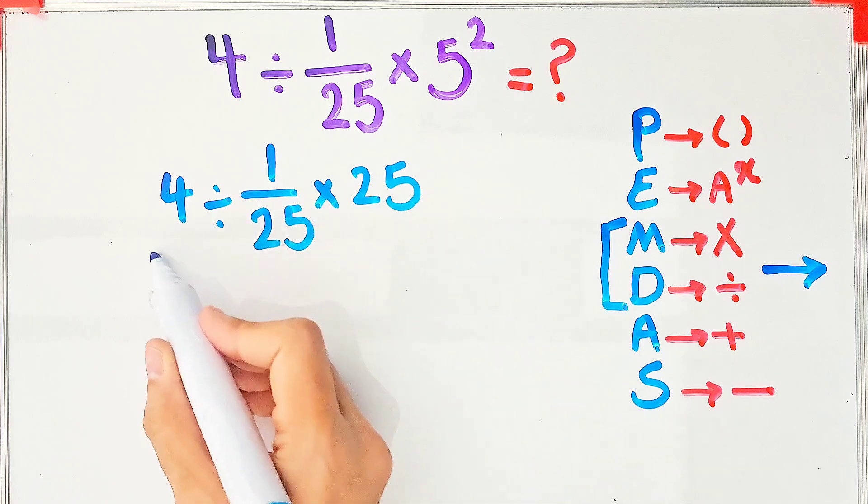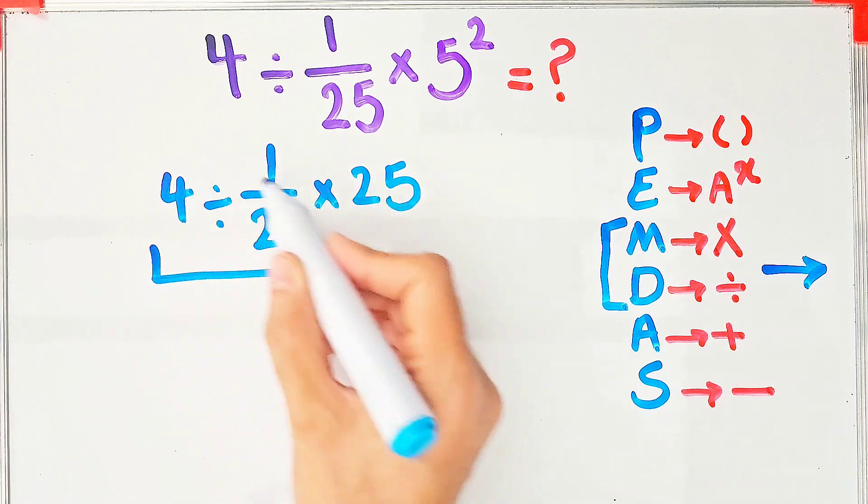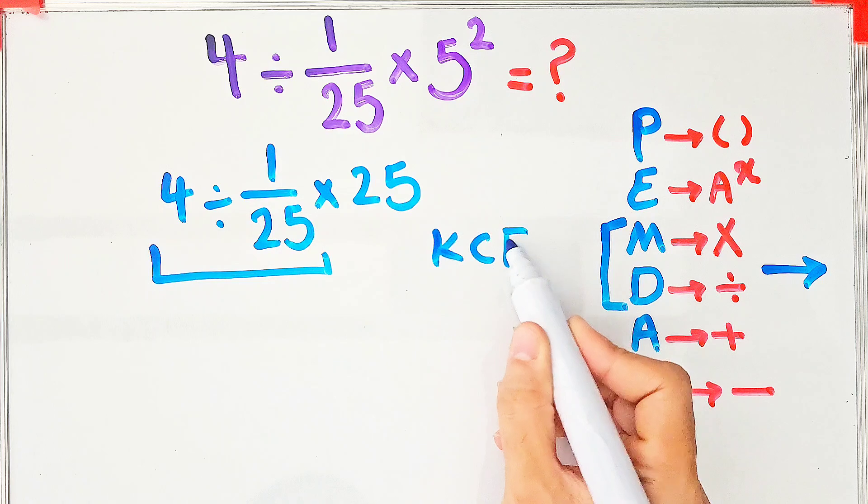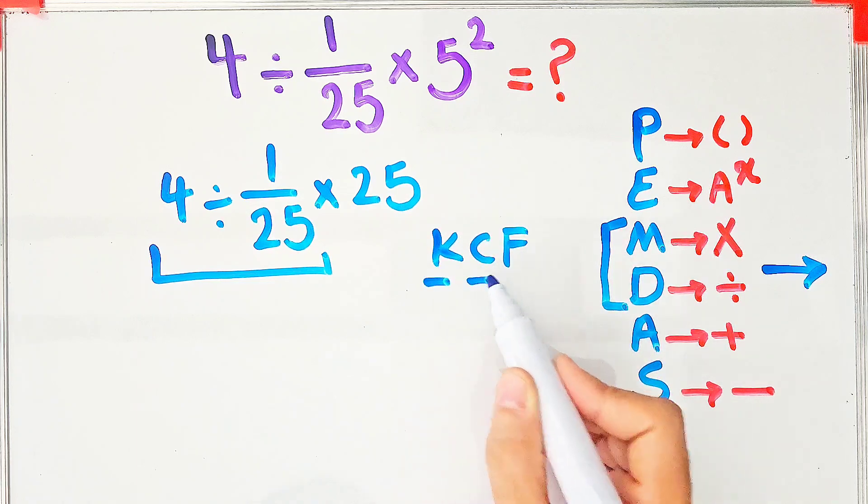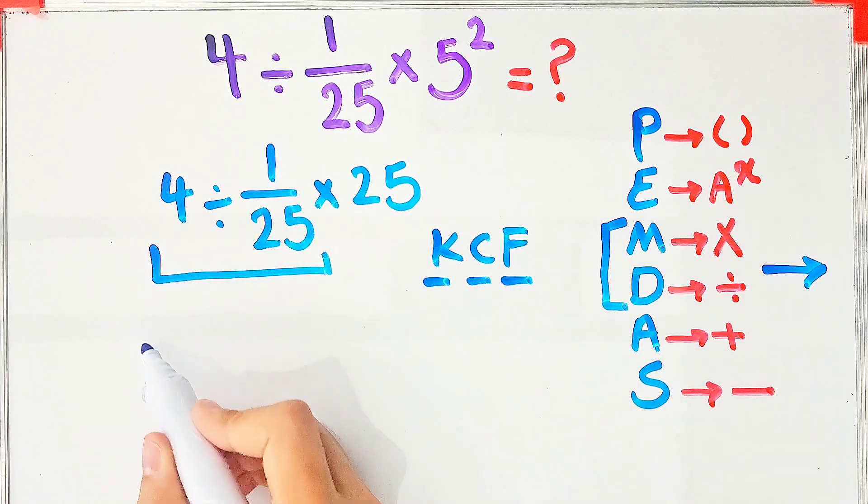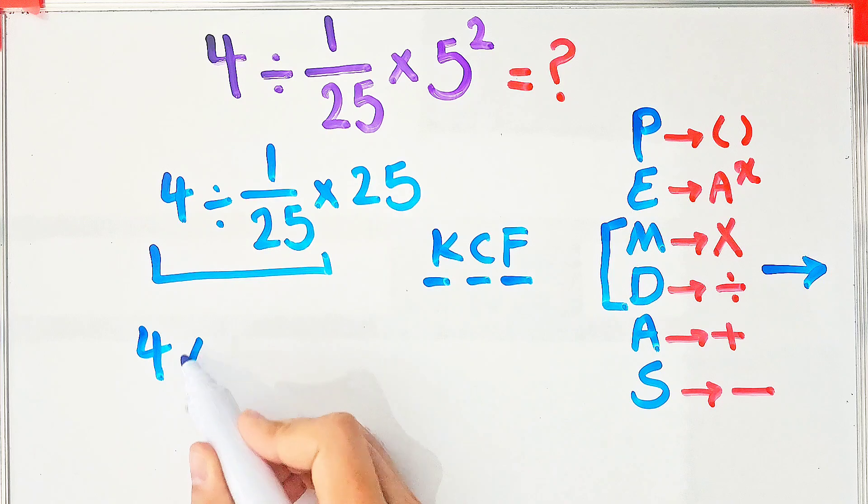To solve the first part, we need to follow the KCF rule. In this rule, K stands for Keep, C stands for Change, and F stands for Flip. We keep the first number as it is, then we change the sign, then we flip the second fraction.